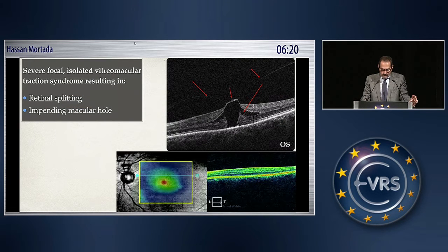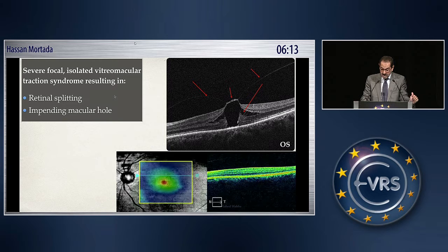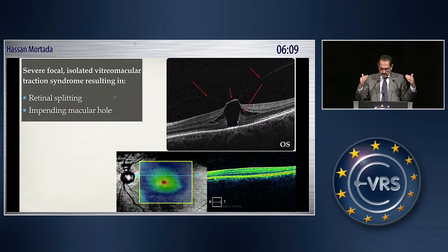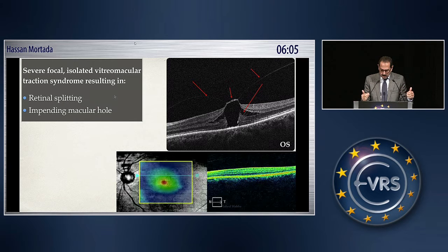If we would like to classify this vitromacular traction as severe, it is severe basically because it resulted in a splitting of the retinal layer, the formation of a pseudo or lamellar macular hole, and there are changes in the outer retina.